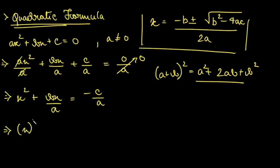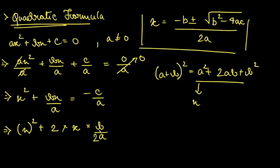It gives us x squared, so the 'a' here is x. We can see there is a 2, so we write 2 times a which is x. Here we have b/a. Now we see there is an extra plus b by 2a whole square term needed, so we add it to the LHS so that the equation remains the same. Here b is b by 2a.